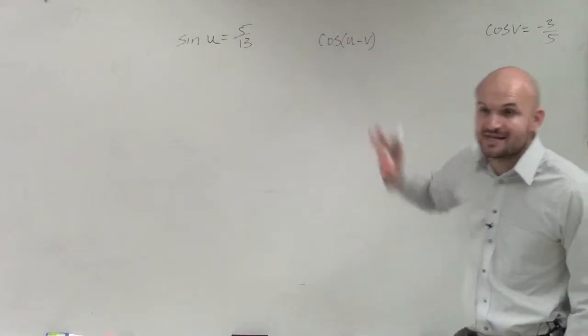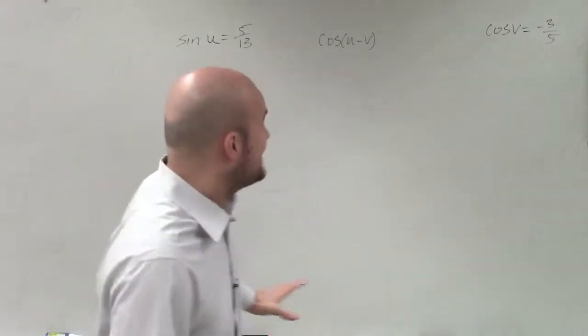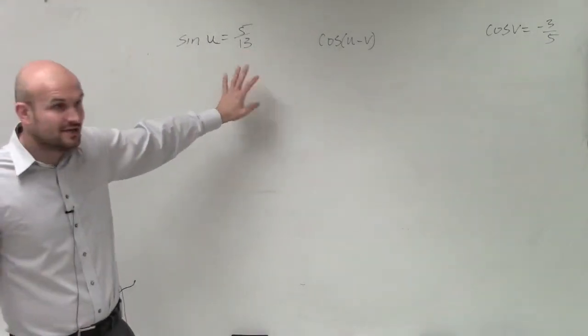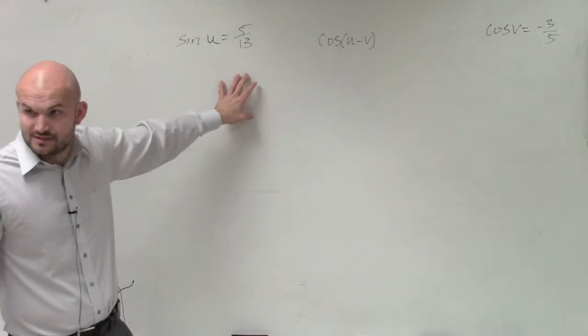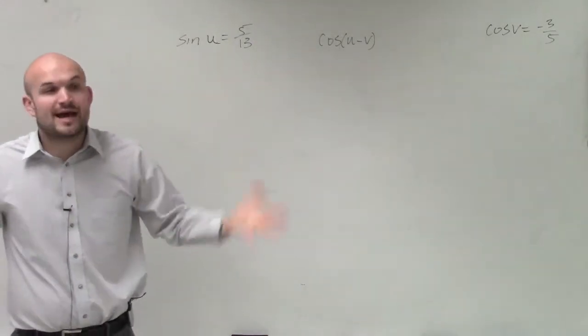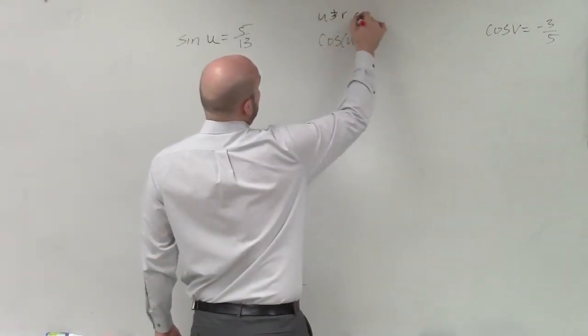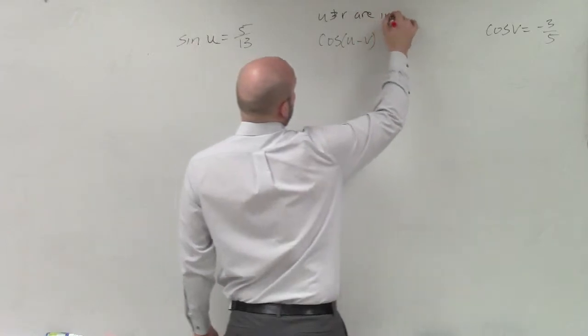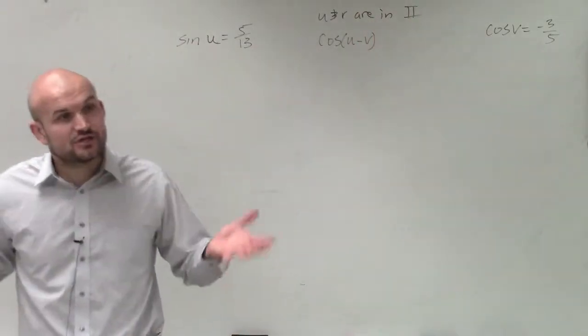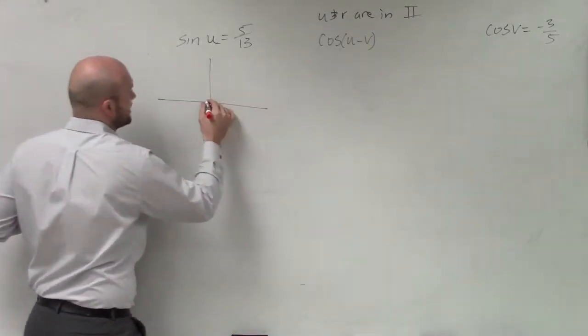The main important thing, ladies and gentlemen, is they're asking us to evaluate for the cosine of the difference of two angles. Again, we look at these two angles and these angles do not intersect the unit circle at a point. So we cannot use the fact of the x and y coordinates for these angles. So we have to create a triangle. And it says your angles u and v are in quadrant two.